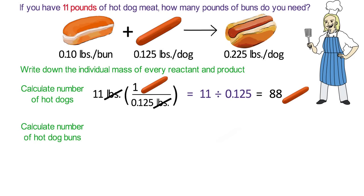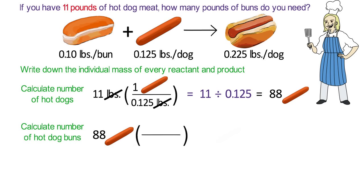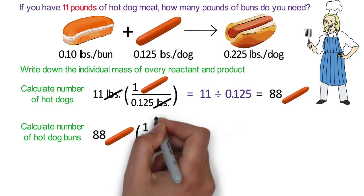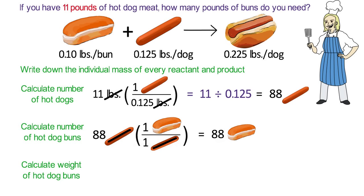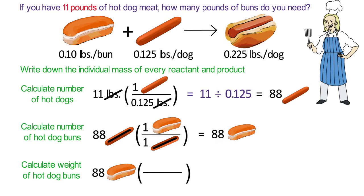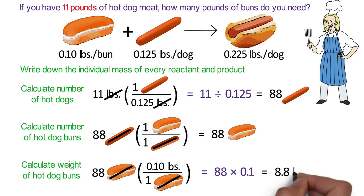Next, we need to calculate the number of hot dog buns we need. This is also a unit conversion problem, so we start by writing down the number we know: 88 hot dogs. Multiply this by a conversion factor fraction. This time, our conversion factor is the balanced reaction, or recipe. From the recipe, we know that one hot dog needs one bun. Hot dogs on the top and bottom cancel, and our answer is 88 buns. We need 88 buns, but our supplier wants to know the weight, so we convert back to pounds: 88 buns times 0.1 pounds per bun gives us a final answer of 8.8 pounds of buns. This is the typical three-step calculation for most stoichiometry problems.